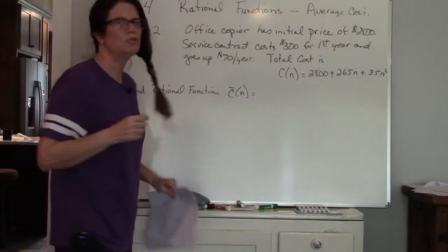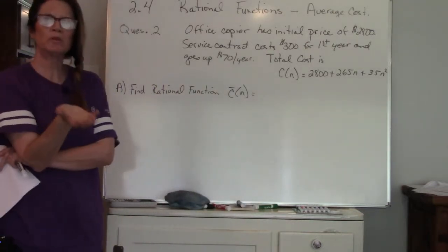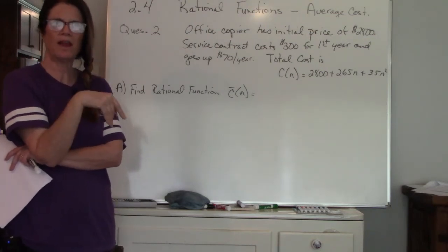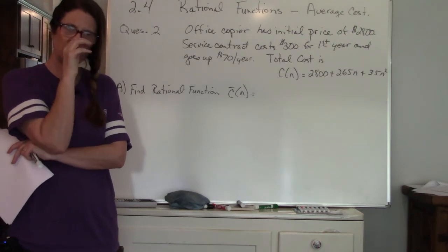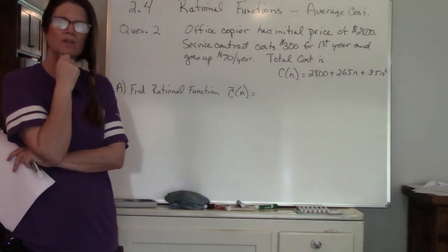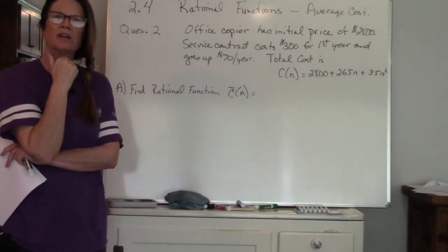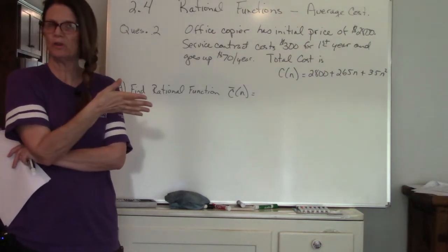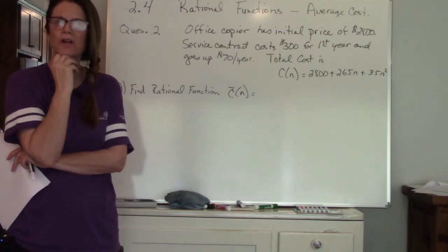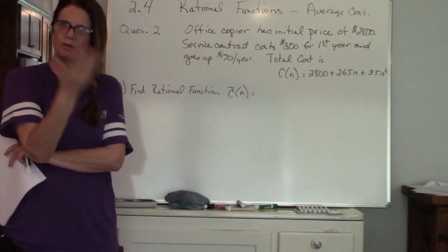The second question in 2.4 is again working with rational expressions and working with the average. This feeds right into what we just did on question one. If you need to go back and look at question one again you can. We're going to be dealing with average costs, dealing with horizontal asymptotes because that gives us an idea of what our graph is approaching.